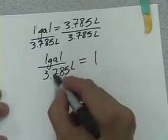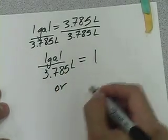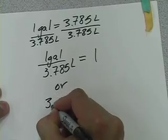So now we have two conversion factors. We have this equal to 1, or we have this equal to 1.